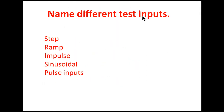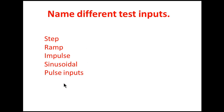Name the different test inputs. The different test inputs are: step input, ramp, impulse, sinusoidal, and pulse input. Laplace transform of step input is 1/s; ramp is 1/s²; impulse is 1.